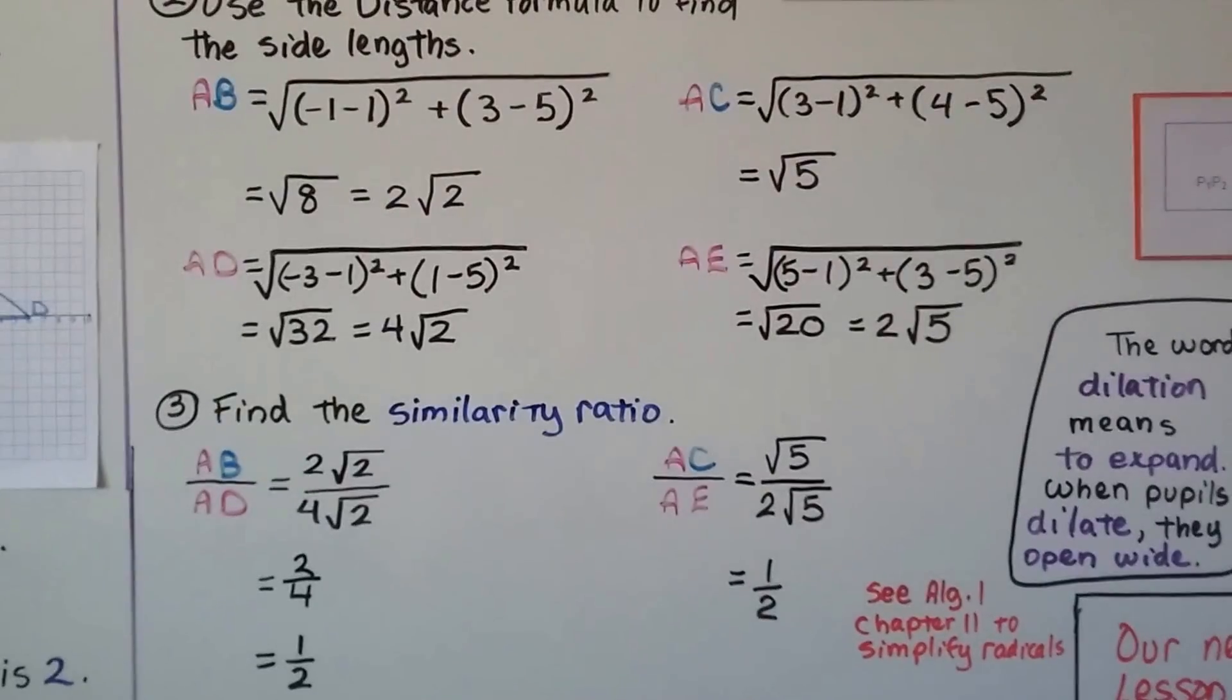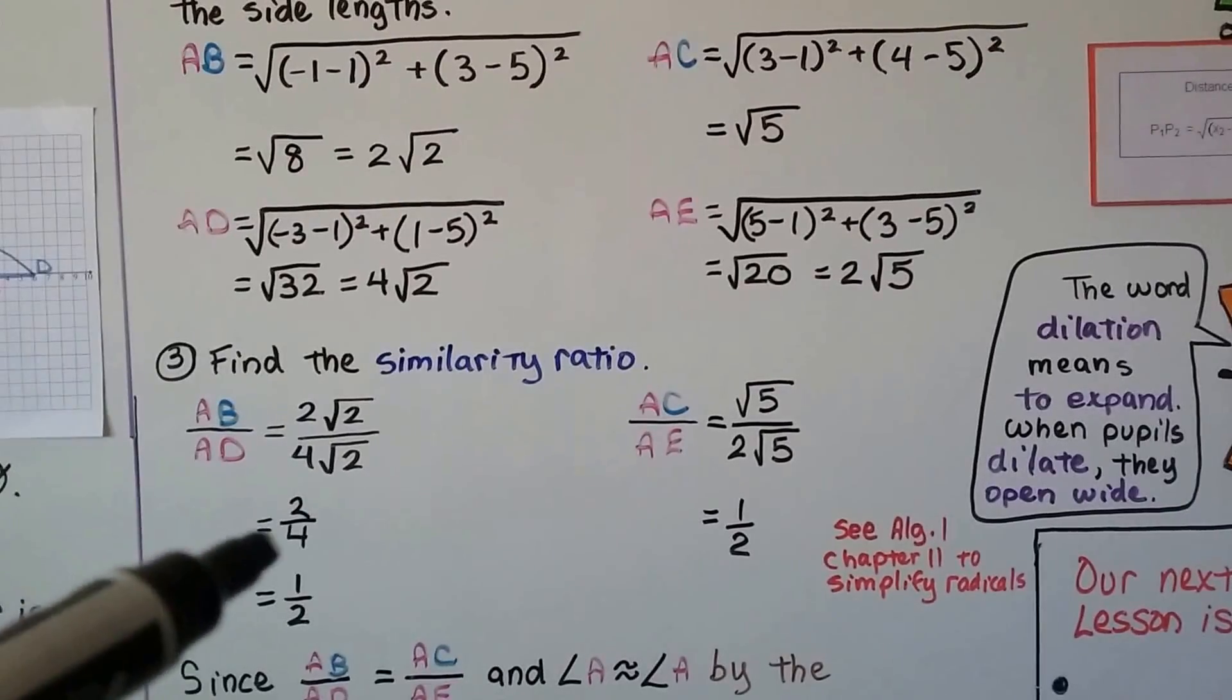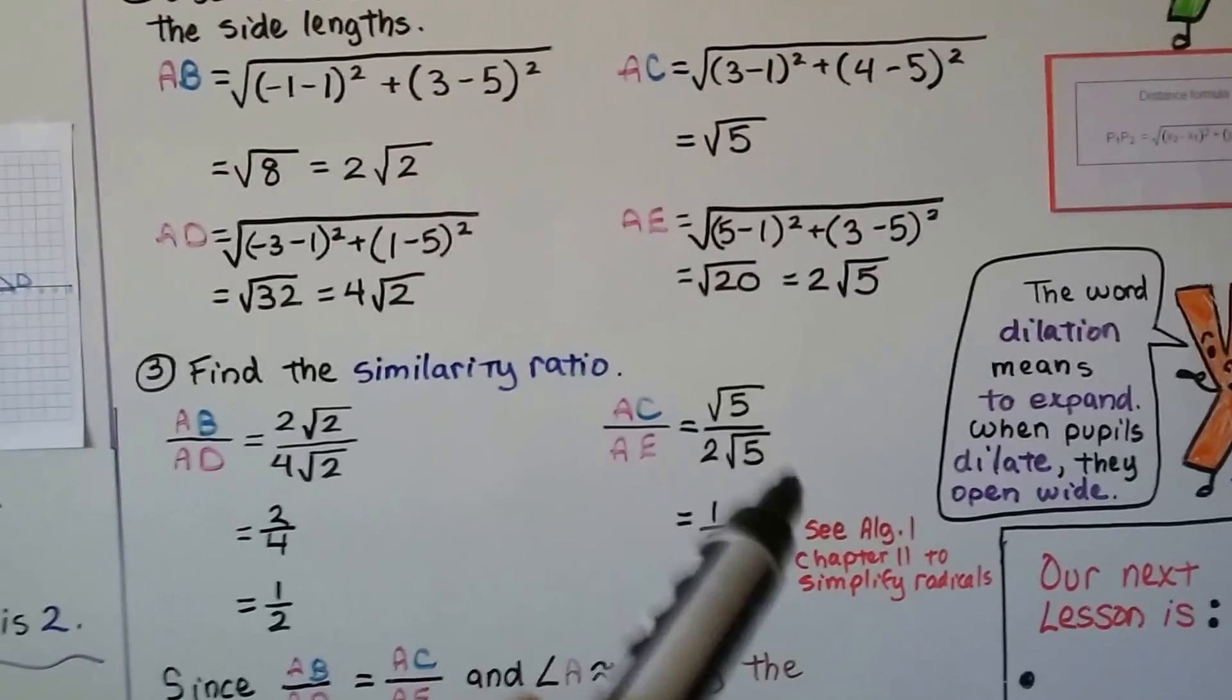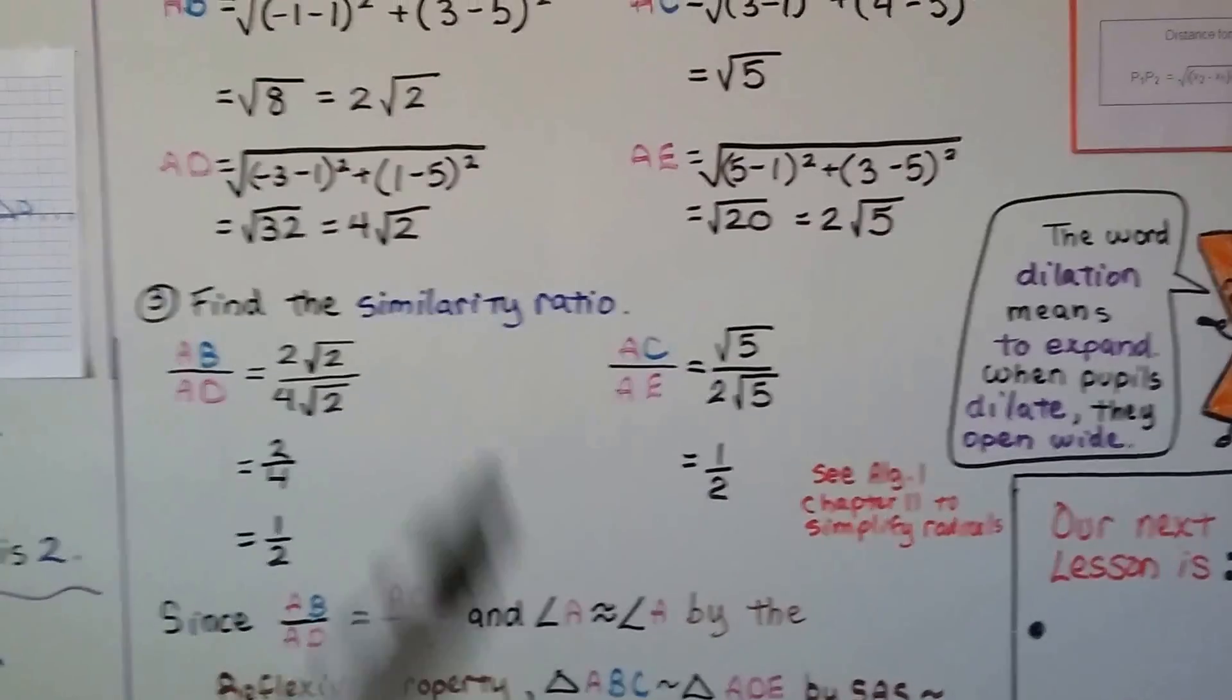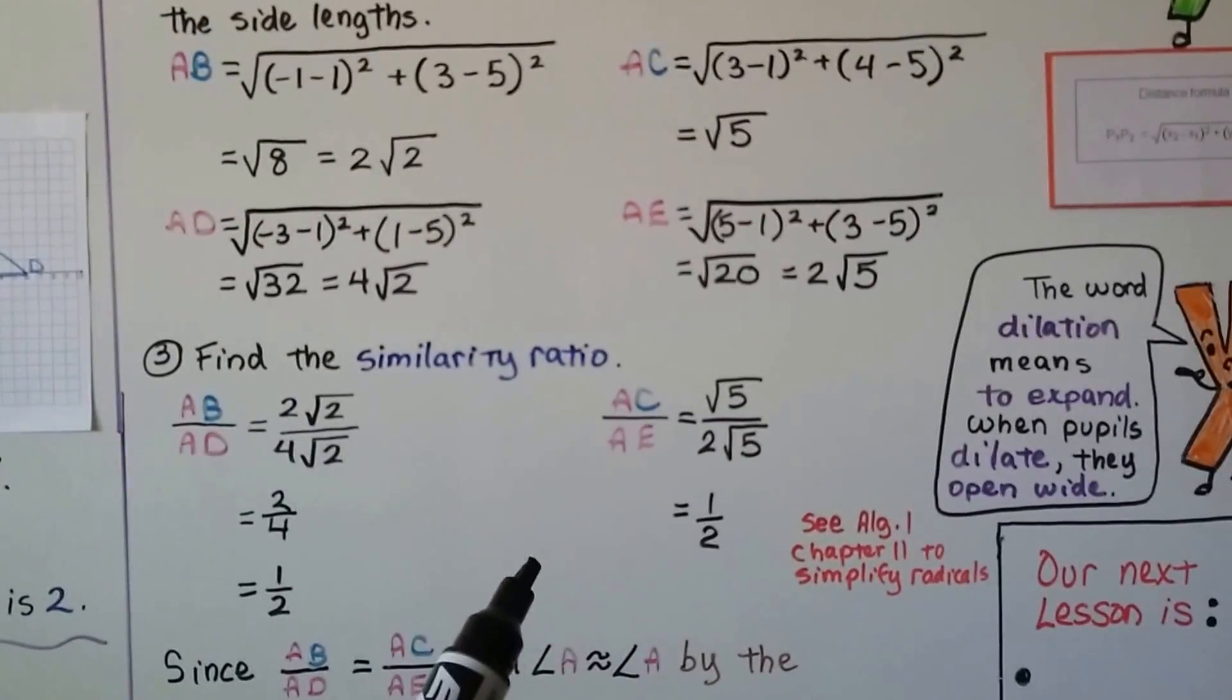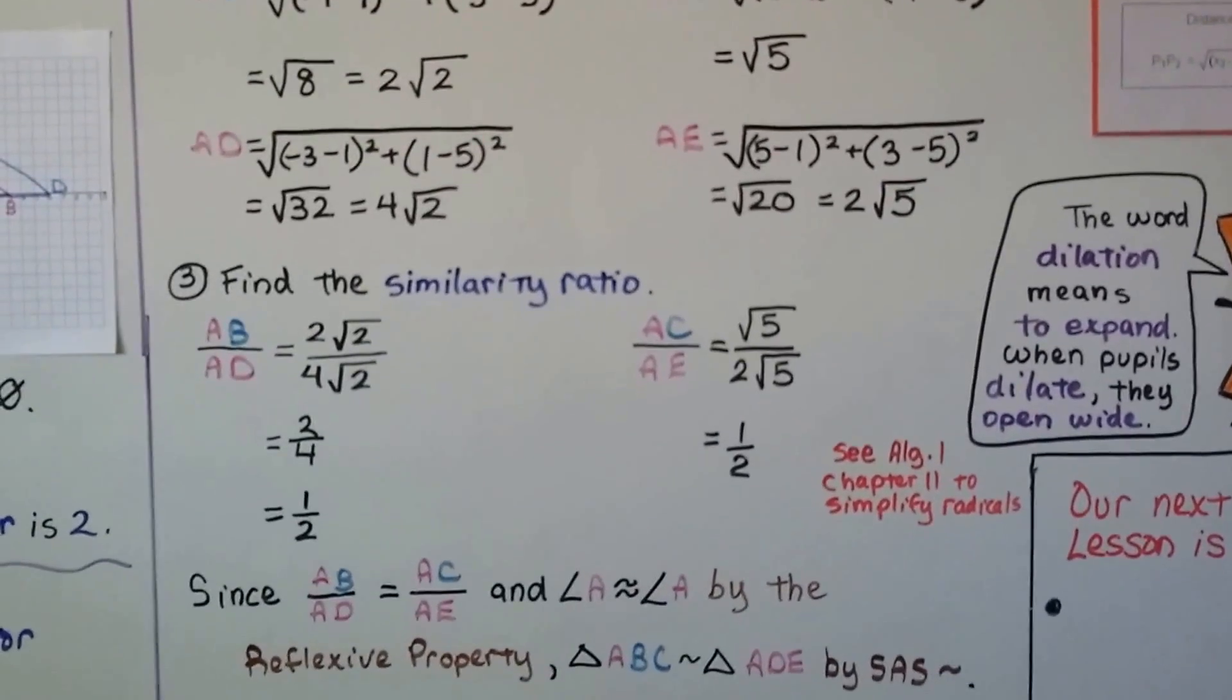Now we find the similarity ratio. AB/AD would be 2√2 over 4√2. The √2 over √2 cancels out as one, and we end up with 2/4, which simplifies to one half. AC/AE is √5 over 2√5. These cancel out as one, and we're left with a half. If you don't understand how to simplify radicals, you need to go back and watch Algebra 1 Chapter 11.